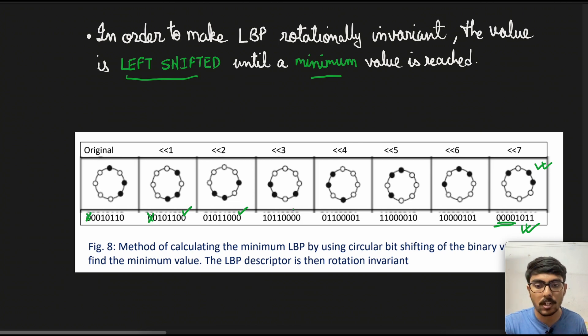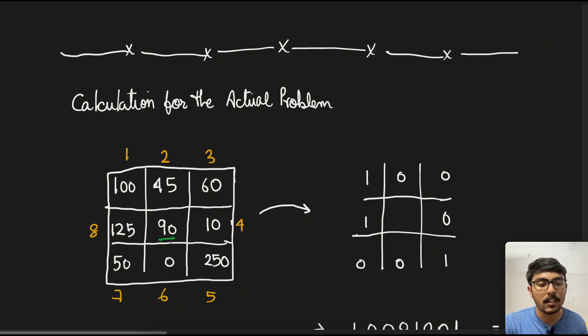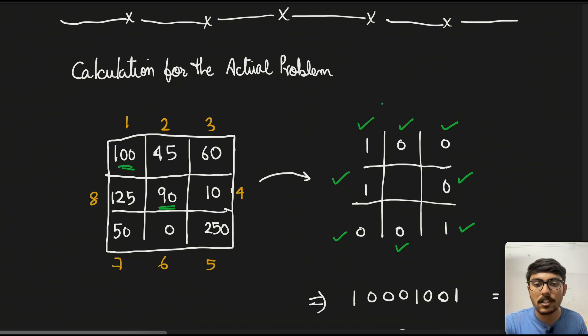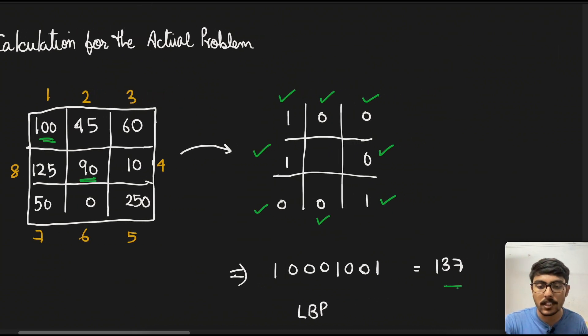Now we can come back to the actual problem that we are discussing today. If we see the first part, that is calculating LBP. What we can do is simply calculate that for 90 because it is the center pixel. 100 is greater than so we have 1, 45 is less so 0, 60 is less so 0, 10 is less 0, 250 is greater so 1, 0 is obviously 0 and 50 is also 0, 125 is greater. So using this particular pathway as we have been defining, we will calculate the LBP. This is coming out to be 137 when we transform the binary code into decimal.